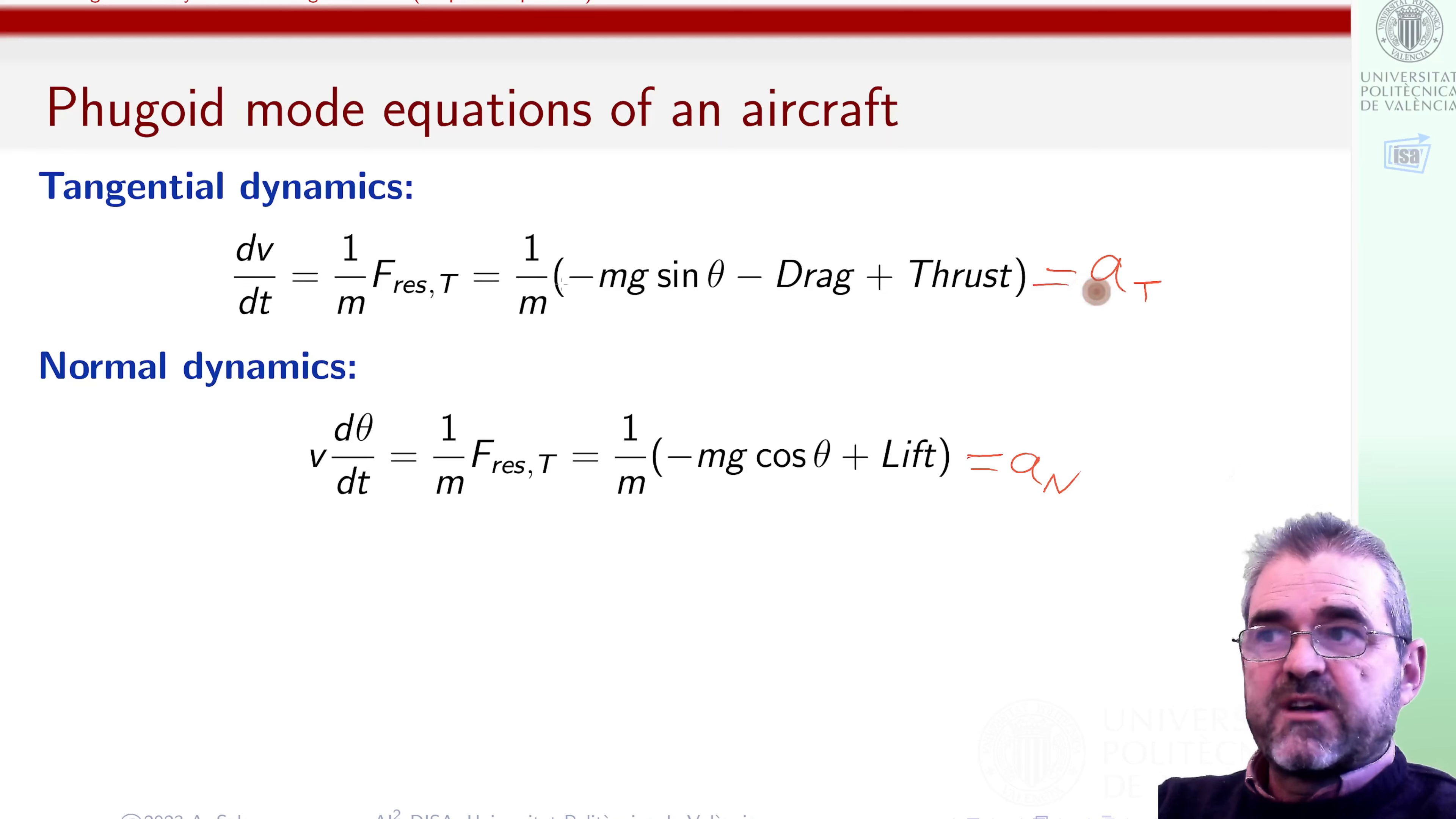tangential acceleration was the derivative of the airspeed, and was this force balance, and normal acceleration was this force balance divided by mass. And as the reference frame is not inertial, it moves with the aircraft's body, then acceleration was the product of linear speed times angular speed of the path the center of mass is following.